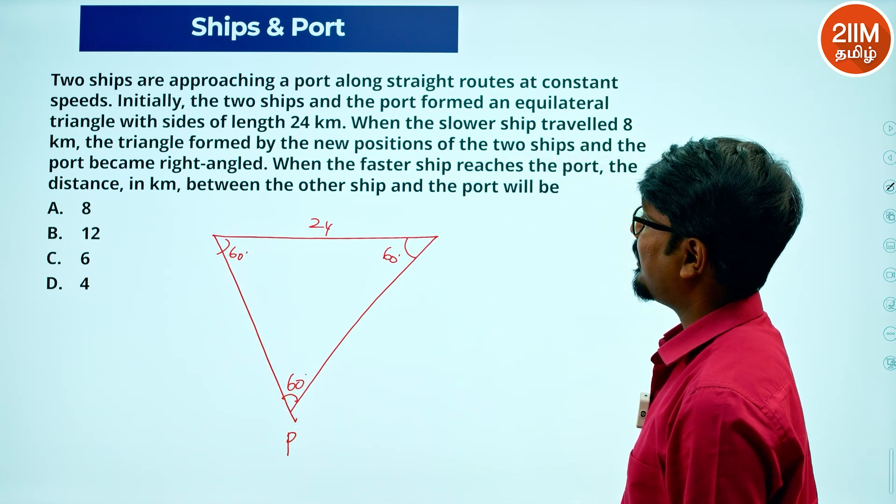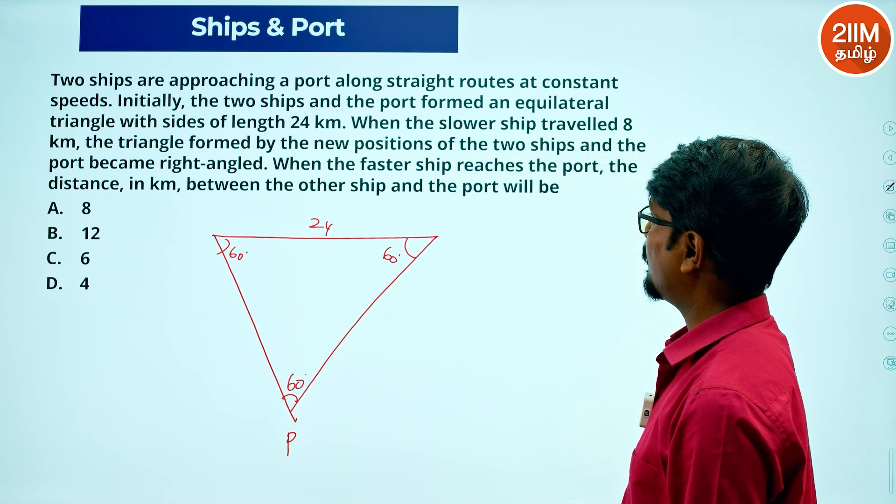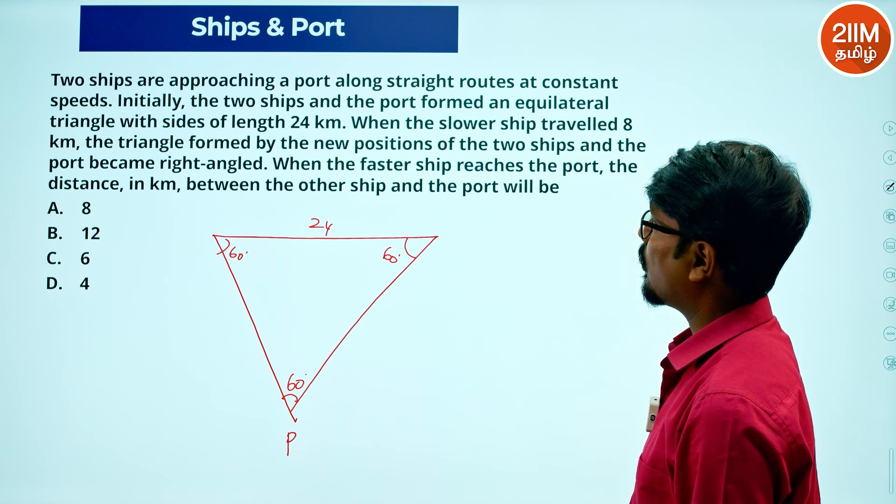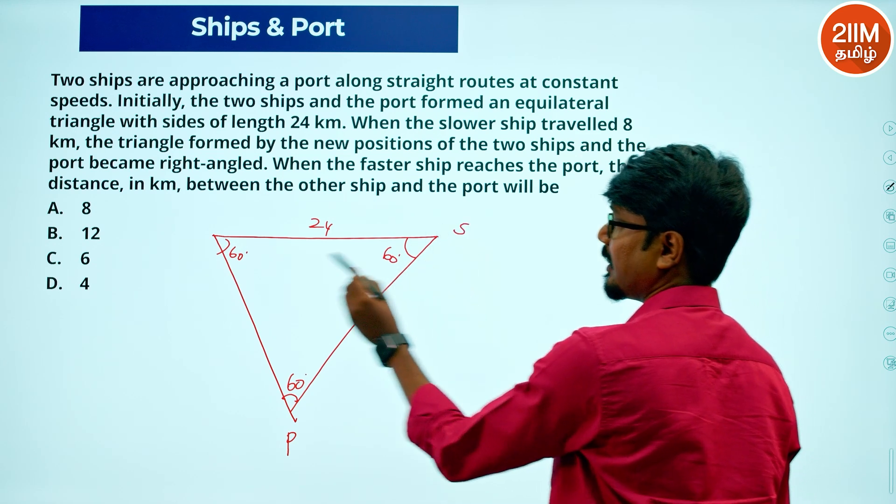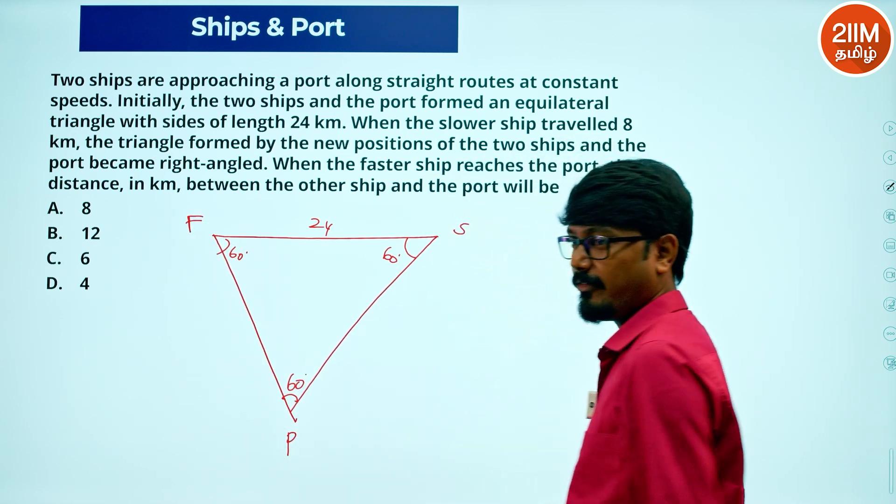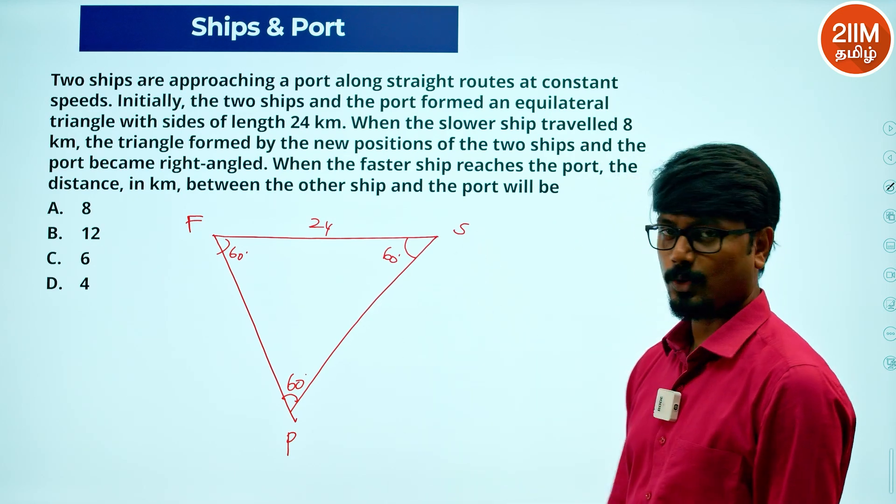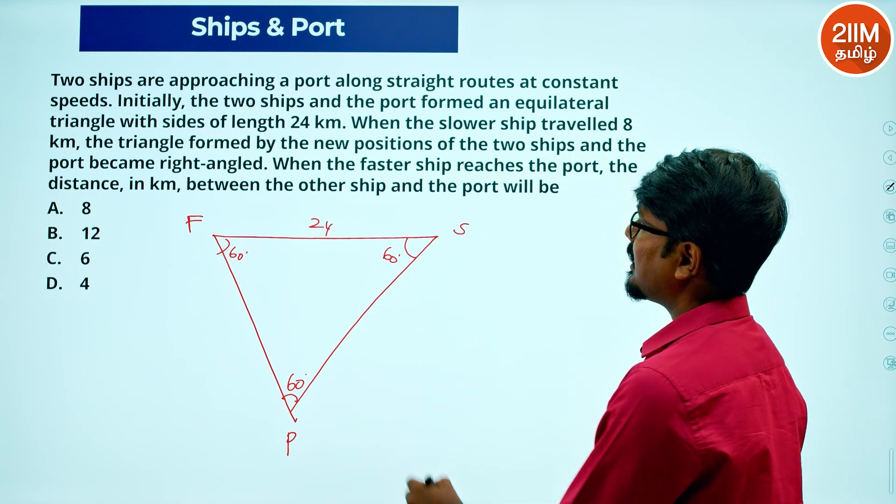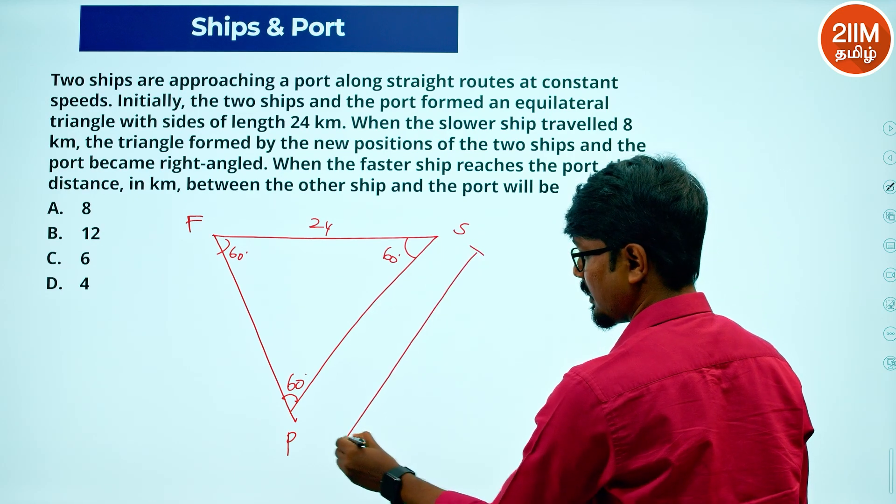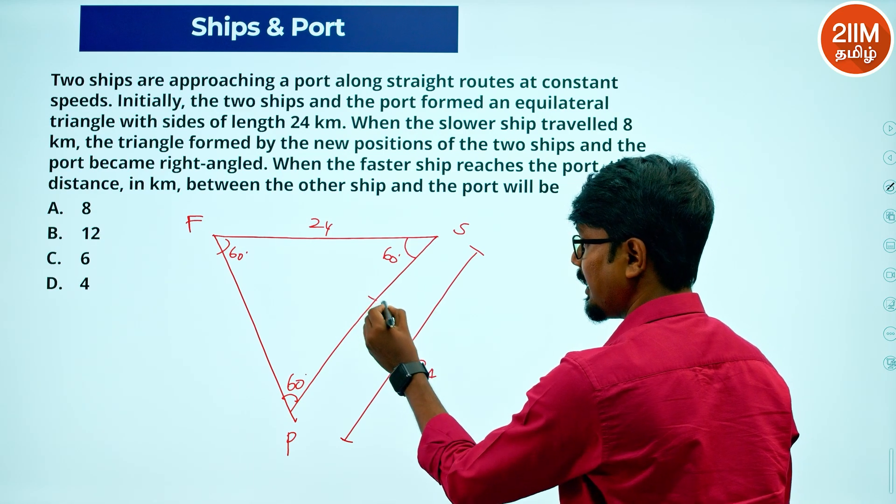When the slower ship traveled 8 kilometers, the triangle formed by the new positions of the two ships—one slower ship and one faster ship. F is the faster ship, S is the slower ship. The slower ship travels 8 kilometers from the initial 24 kilometers.